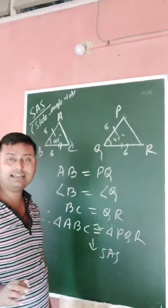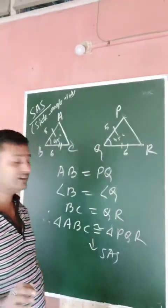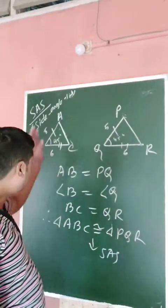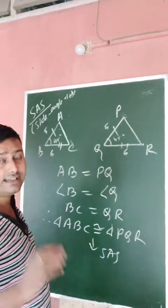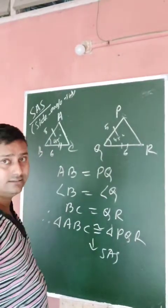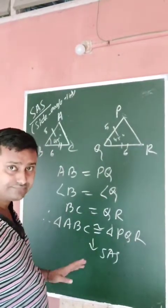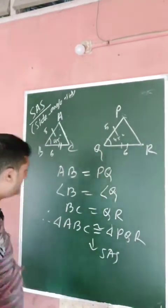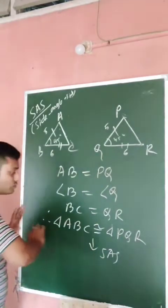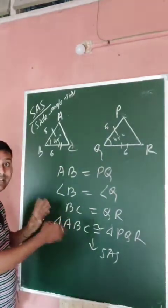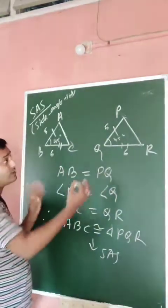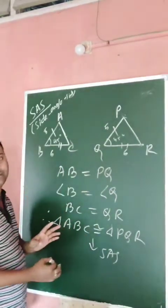So, if two sides of a triangle and the angle in between them are equal to the corresponding two sides and the included angle of another triangle, then those two triangles are congruent. This criterion is known as SAS — Side, Angle, Side.